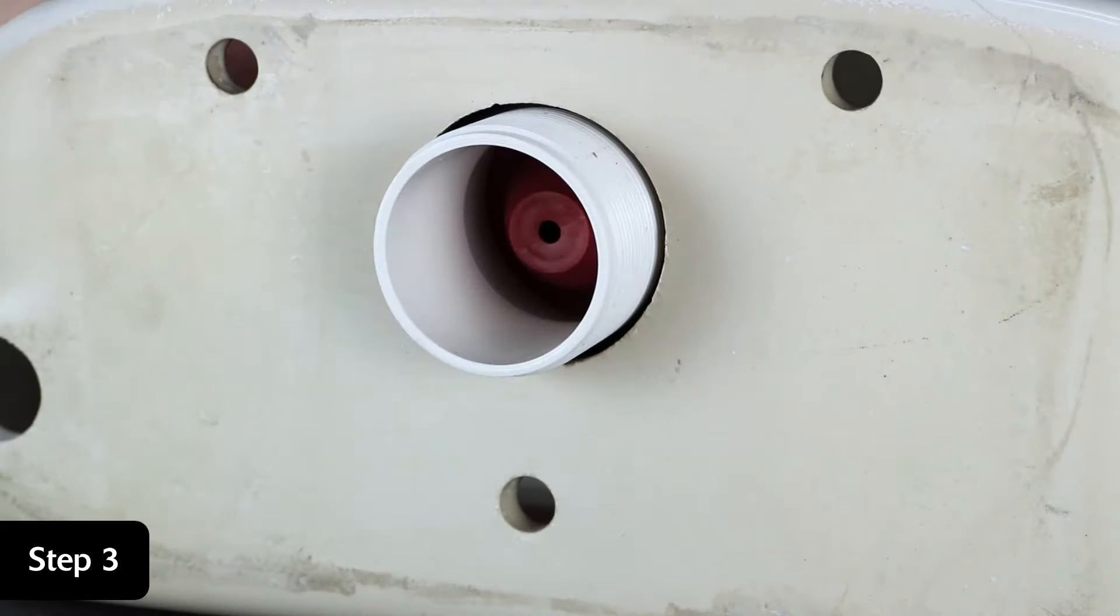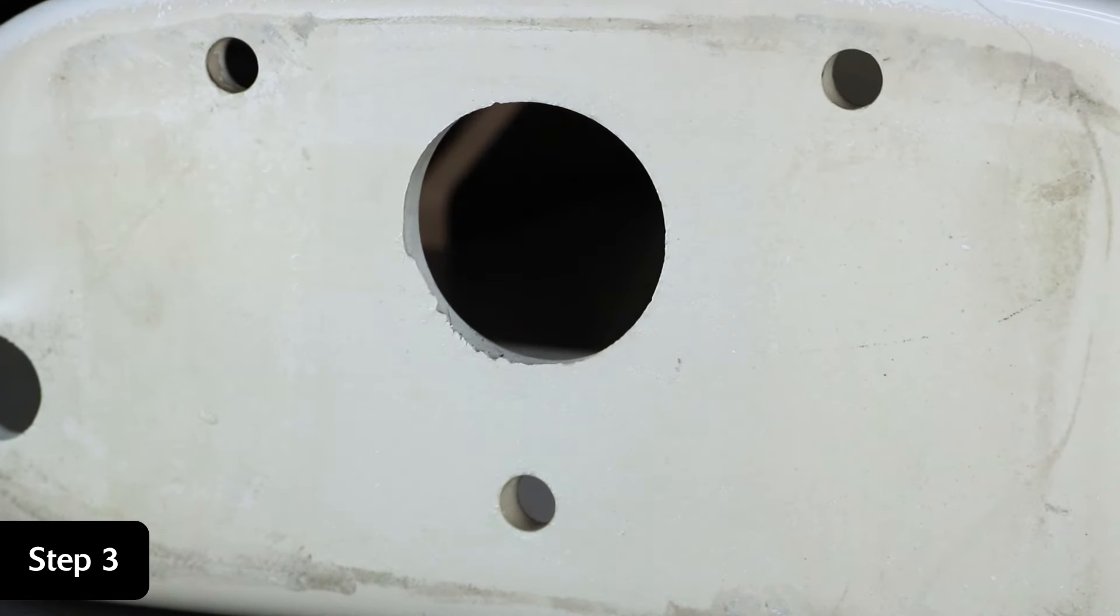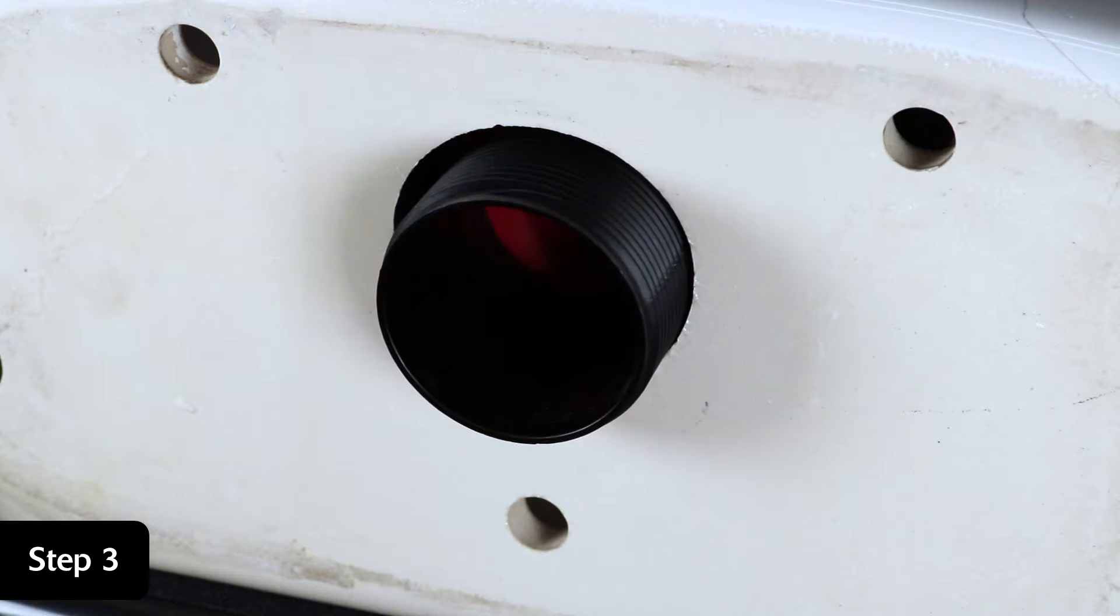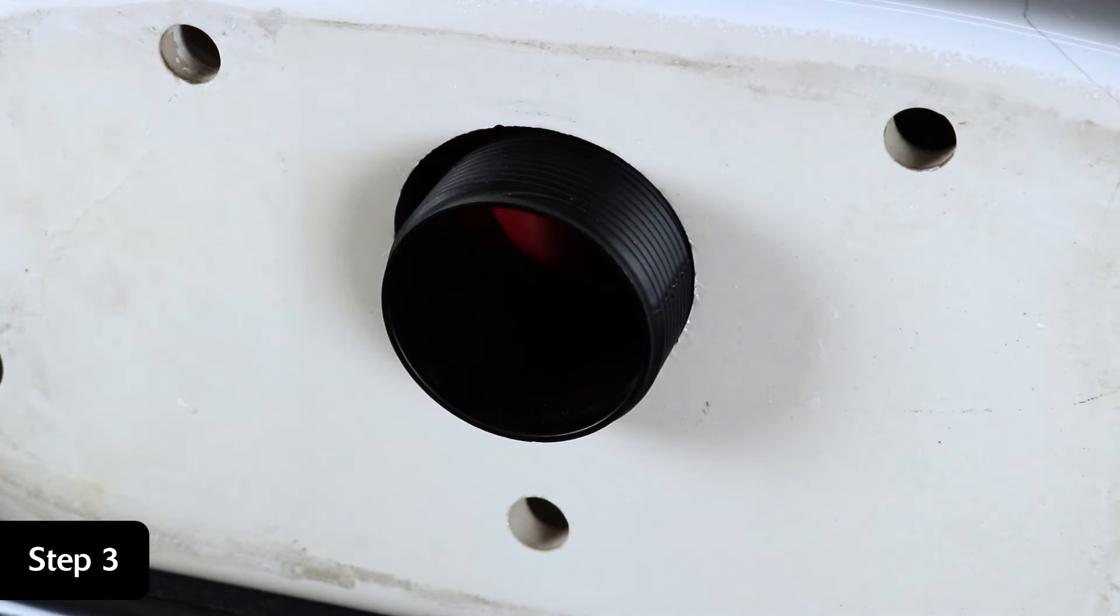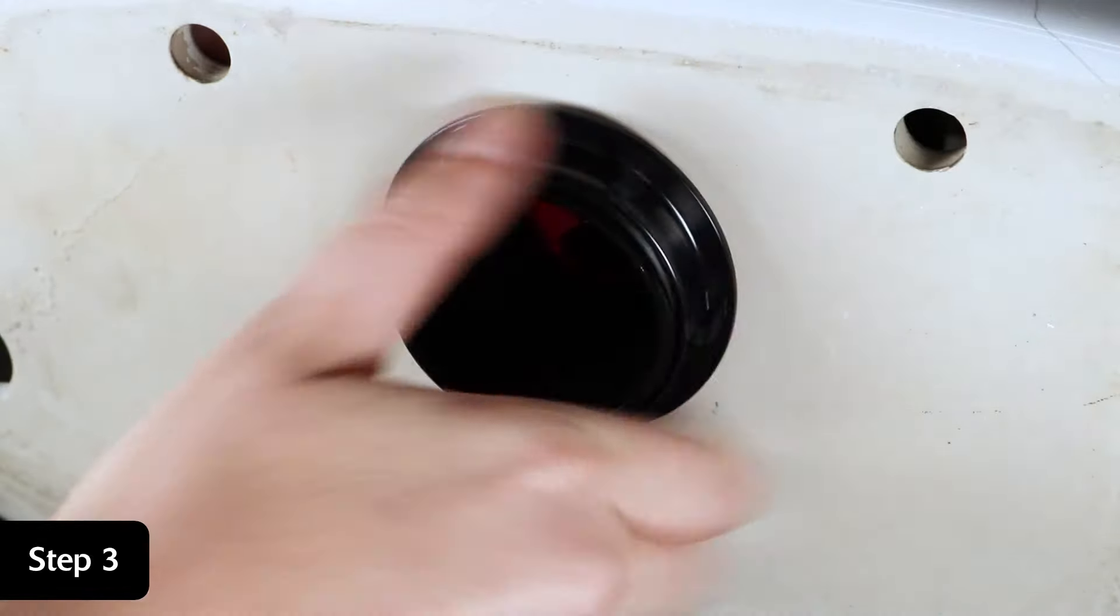Remove the old mounting nut and pull the old flush valve and flapper out of the tank. Place your new Corki flush valve into the tank and slide the chipboard washer over the threads. Hand tighten the mounting nut.